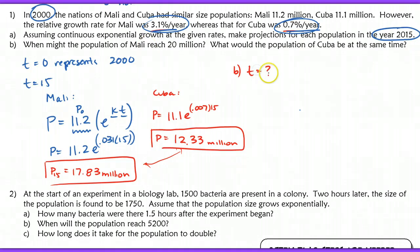In Part B, we're asked to find T because it asks us when will the population reach 20 million. We're going to be solving for T using our same exponential growth model, and we have already the outcome of the population, so we want to know when it's going to reach 20 million. So I have 20 equals 11.2 times E to the 0.031 T.